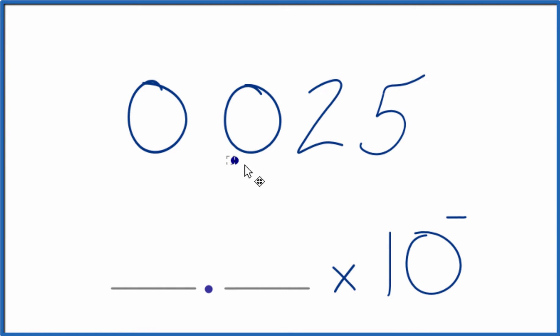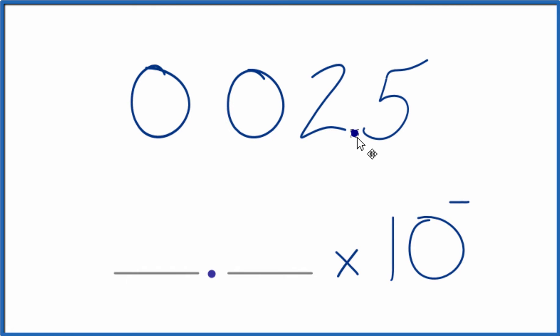So let's take and move this over 1, 2. Now we have our whole number. And since we moved it over 1, 2 places, that means our exponent will be that negative 2 here.